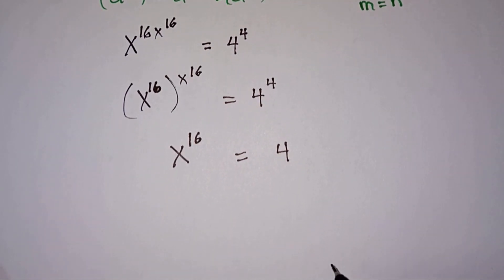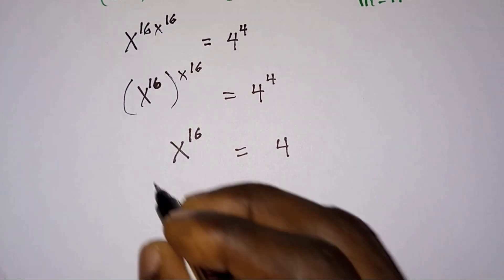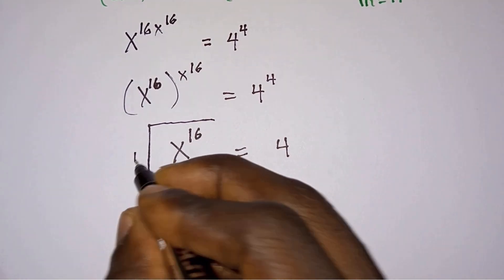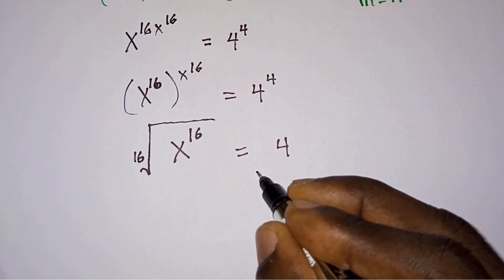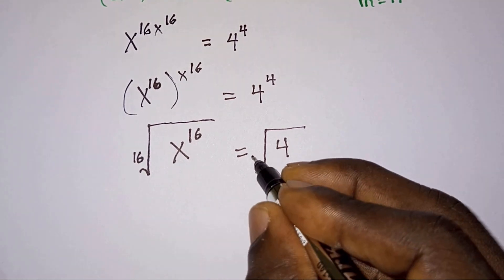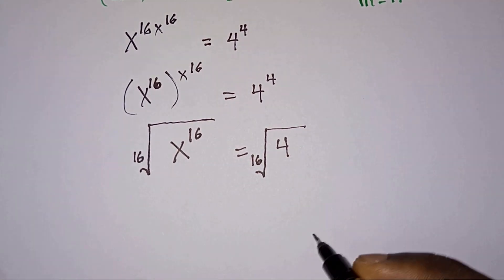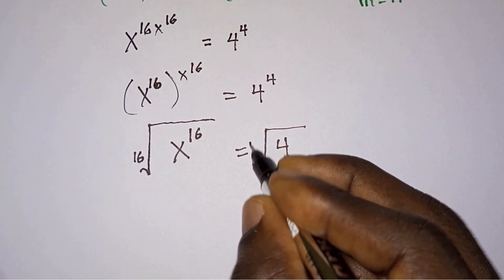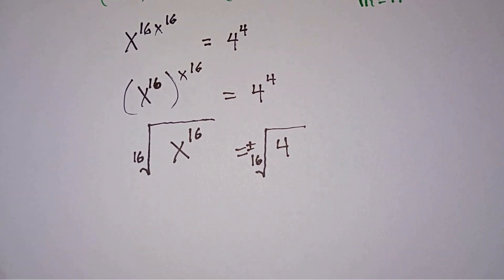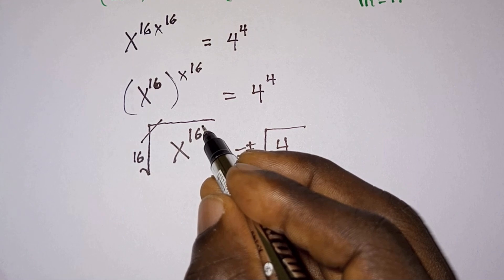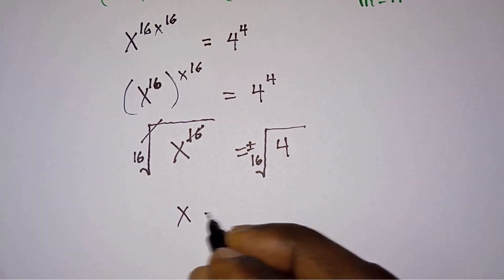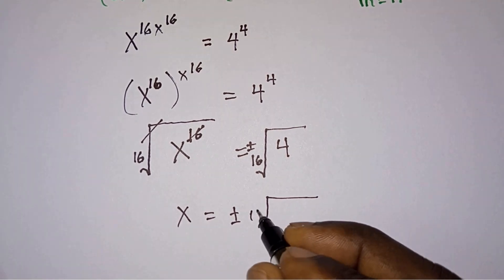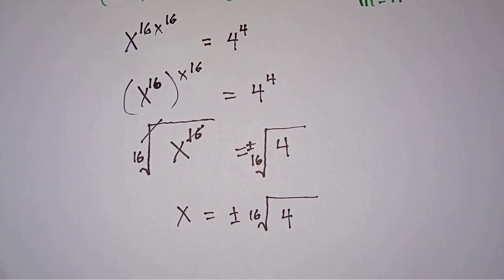We are looking for x, so what should we do? Let's go ahead and take 16 roots on each side of the equation. But because 16 is an even number, it is always important to bring plus or minus. So with this 16 roots and this 16 will go, we are left with x is equal to plus or minus 16 root of 4.